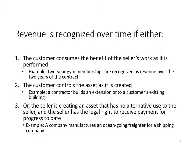Usually, revenue is recognized in proportion to the amount of the performance obligation that's been satisfied. If the gym has provided one month of service under a 24-month contract, then 1/24th of the membership fee can be recognized as revenue. If payment was made up front, it's initially booked as a liability — deferred or unearned revenue. But then over time, as membership access to the gym is provided, the revenue is recognized.